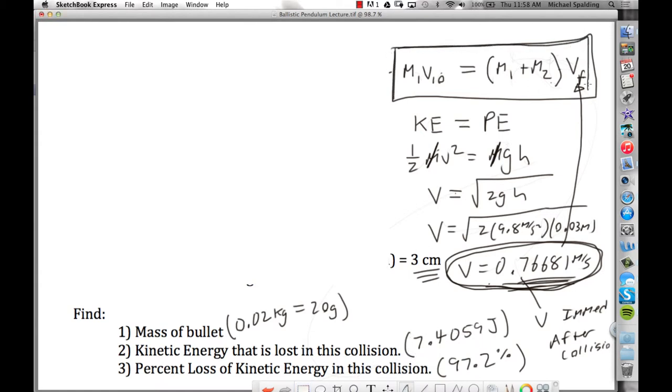because we just figured out what this velocity was from conservation of energy, the only thing missing in this equation is M1. So you do the algebra, and you get 0.02 kilograms, which is the same as 20 grams. Okay. So that's the answer to the first question.